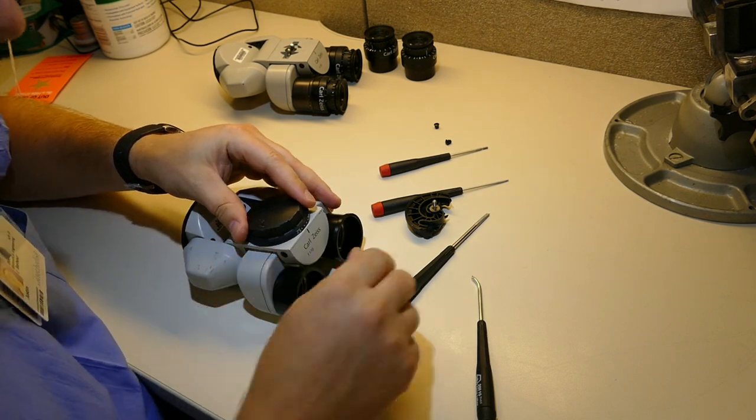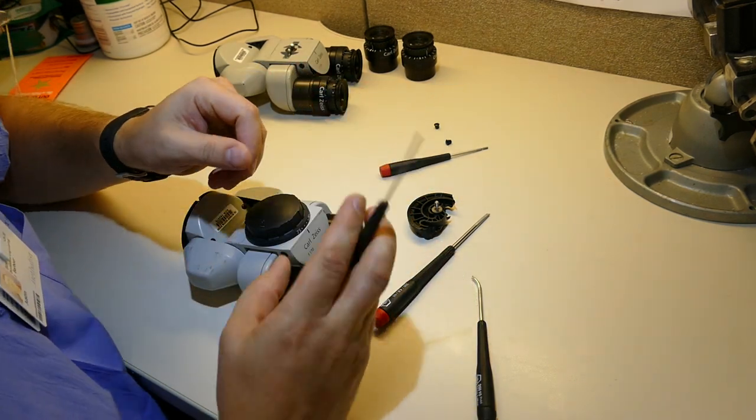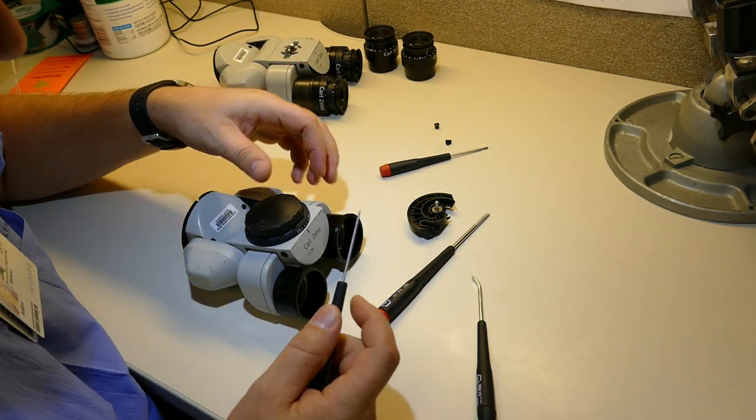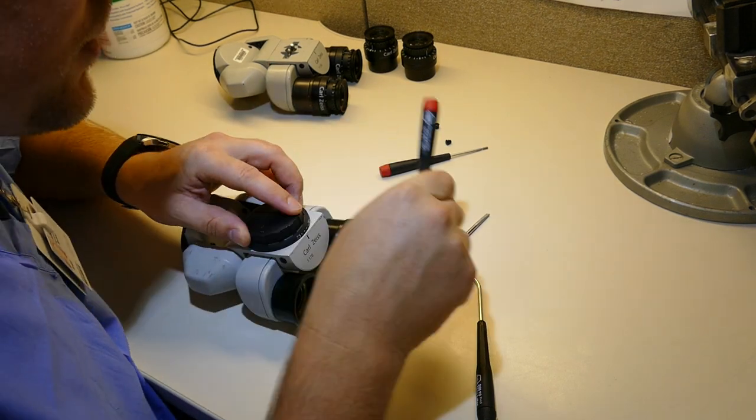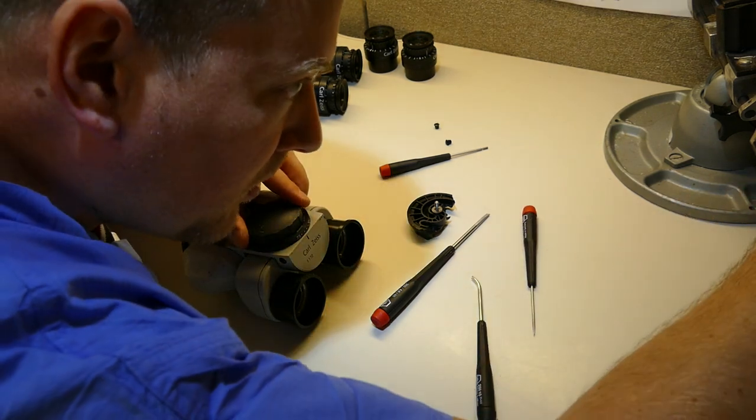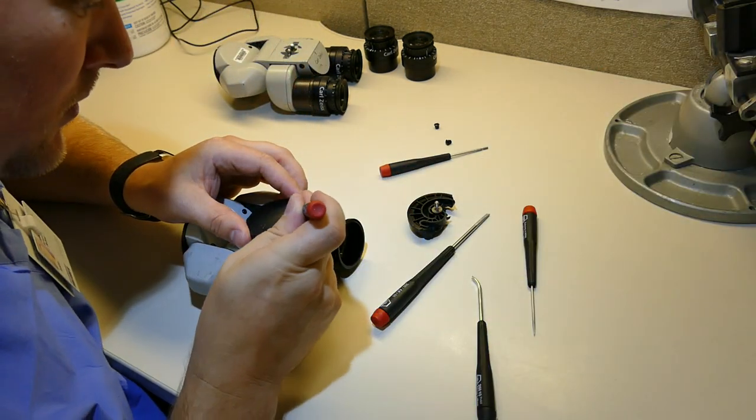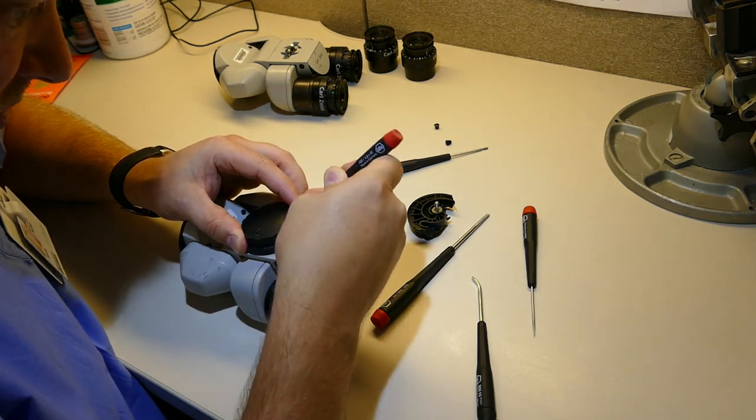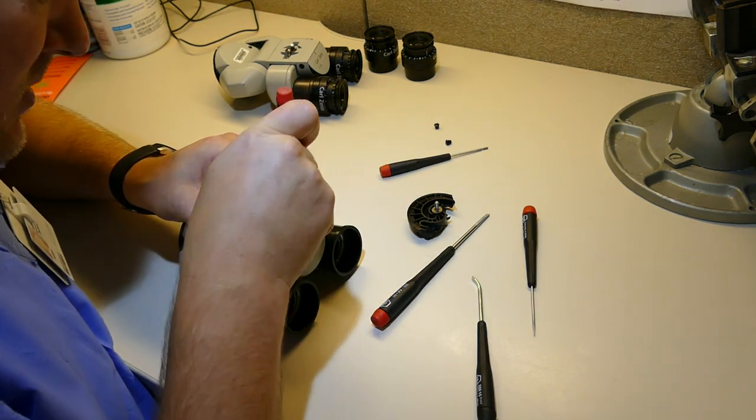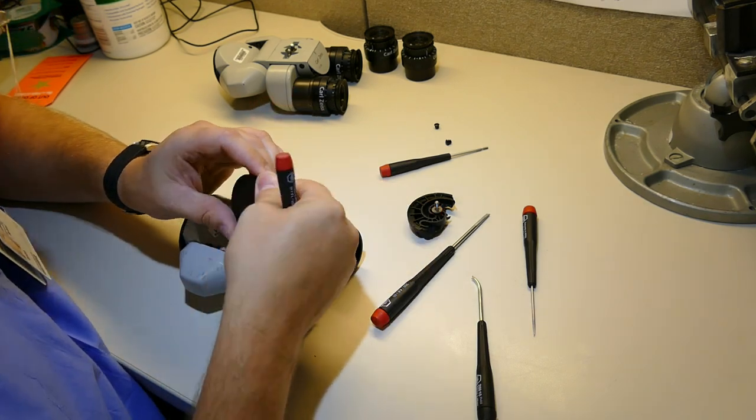Now, to pull the knob off the other unit, we're going to take the smallest flat head screwdriver and stick it around the edge. Let me get a smaller one. Stick around the edge and we're going to pop the cover. There we go.